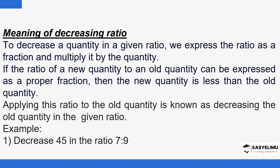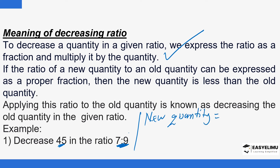Applying this decreasing ratio to an old quantity is known as decreasing the old quantity in the given ratio. To get the new quantity, you take the ratio, express it as a fraction by picking the first number divided by the second number — so that gives 7 over 9 — and then multiply by the old quantity, which is 45.